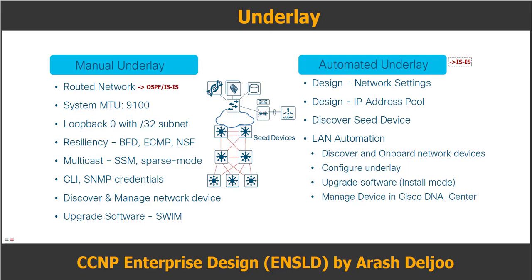Cisco DNA Center has a feature called LAN automation for automatically provisioning switch configuration for the underlay network based on best practices. However, underlay network switch configuration can also be done manually. LAN automation can provision CLI and SNMP credentials for the switch and upgrade devices to the desired software version. Additionally, LAN automation can configure MTU, loopbacks, routed point-to-point links, ECMP, BFD, and routed access for the fabric nodes.